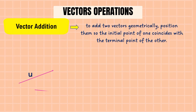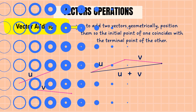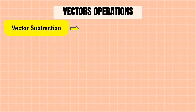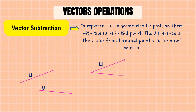The next operation is vector addition. To add two vectors geometrically, position them so the initial point of one coincides with the terminal point of the other — this gives u + v. The next operation is vector subtraction. To represent u − v geometrically, position them with the same initial point; the difference is the vector from the terminal point of v to the terminal point of u.